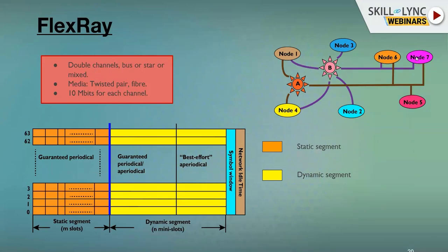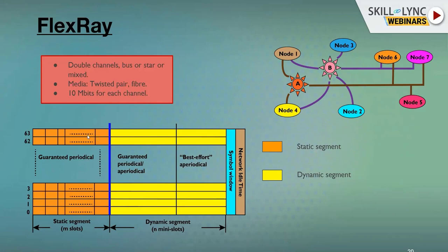FlexRay can use a double channel — two channels. Nodes (ECUs) are connected at each end. Depending on the network and which ECU needs data from which other ECU, they are connected accordingly. The connection can be a single bus, a star topology, or a mixed topology. The media used can be twisted pair cable or optical fiber, and the topology is decided based on transmission requirements.